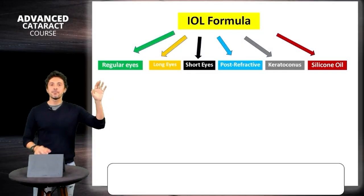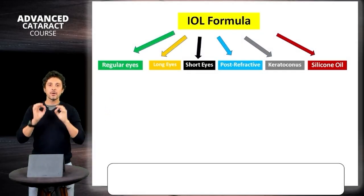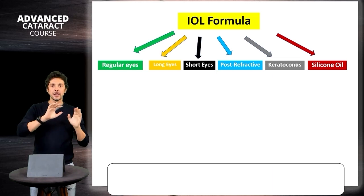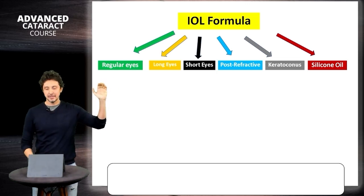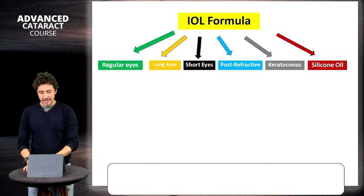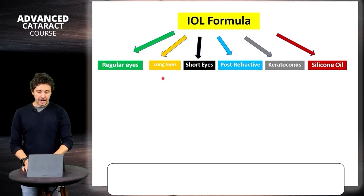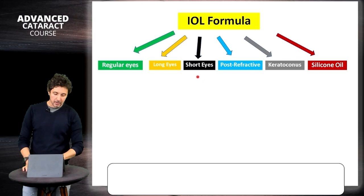So here's another important point about the IOL formula. I like to say you have formulas for regular eyes that you discussed in the last lecture, formulas for long eyes, formulas for short eyes, formulas for post-refractive eyes, and formulas for keratoconus.